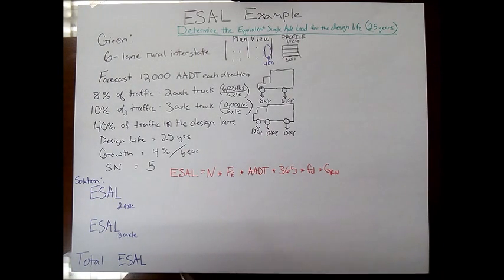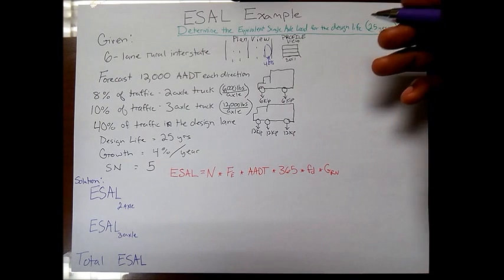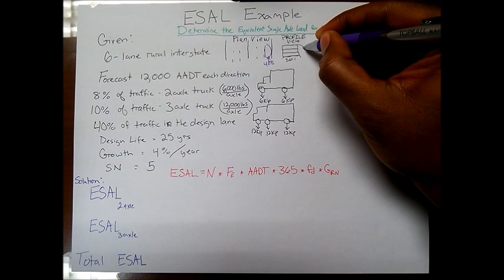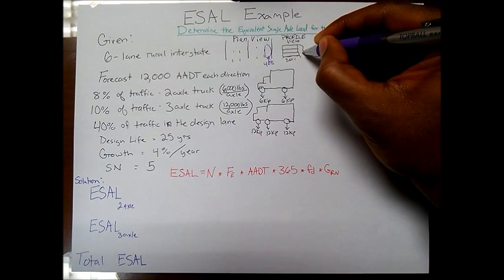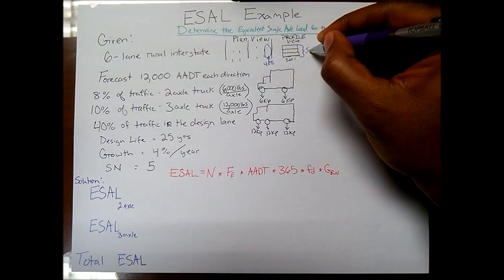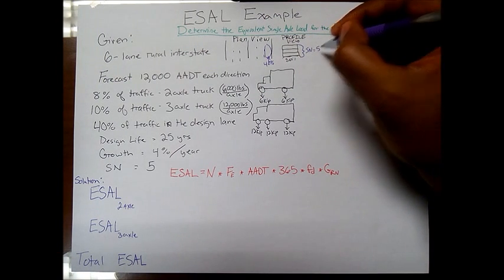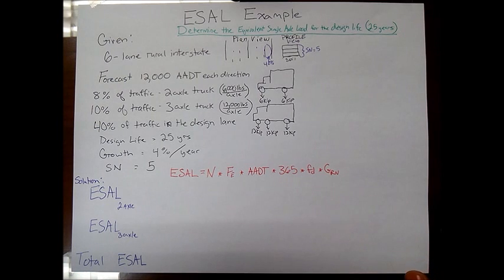You have a structural number of 5. So what that means is, if you remember, a structural number is a number that is assigned to the structural strength of the entire pavement system. So we're saying structural number equals 5. We want to determine what the ESAL is for the 25 years.